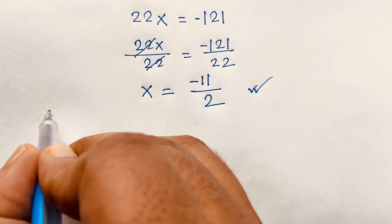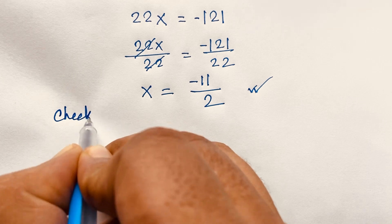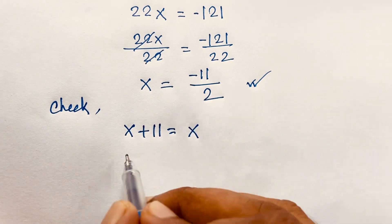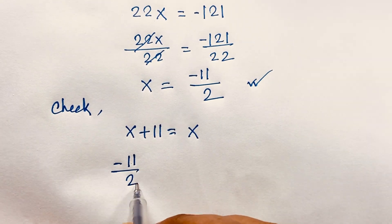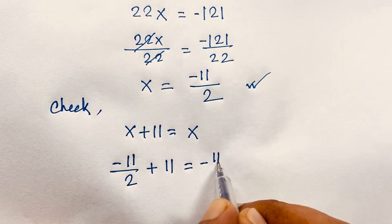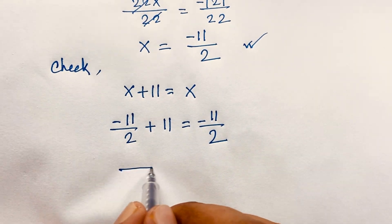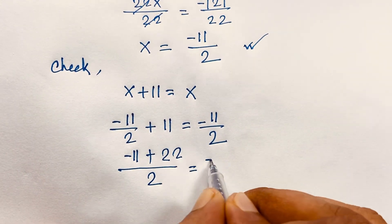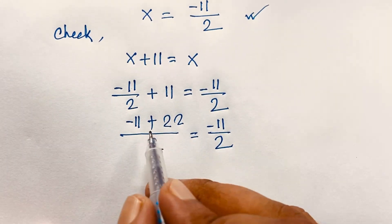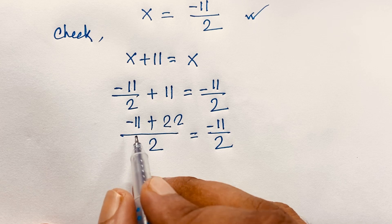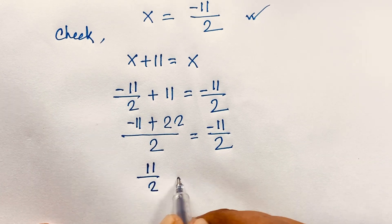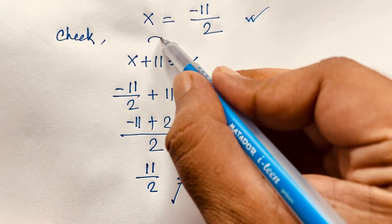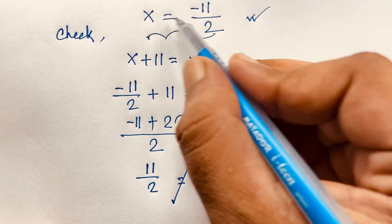Let's verify our question which is x plus 11 is equal to x. So I take this value: minus 11 over 2 plus 11 is equal to minus 11 over 2. The common denominator is 2, so minus 11 plus 22 over 2. You can see plus 22 and minus 11 it will be positive 11 over 2. But this is negative 11 over 2 — both are not equal. So this answer is not a real solution.